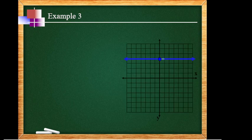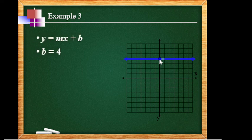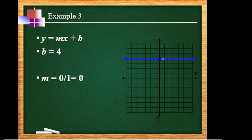Example 3. The line is horizontal. Count the y-intercept location: 1, 2, 3, 4 — so b = 4. Did the line rise? No, so rise = 0. Even though it runs, when rise is 0, the slope is always 0. So the slope is 0, and with b = 4, we have y = 0x plus 4, or y = 4.